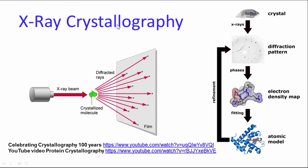X-ray crystallography: once you have a pure protein, you can sometimes crystallize it if you get the solubility just right. You then hit the crystal with an X-ray beam, and the nuclei of the atoms diffract those X-rays. The X-rays are detected on film or now with instant camera-like detectors, producing a diffraction pattern. From that information, Fourier transform computations and sophisticated software are used to create electron density maps.